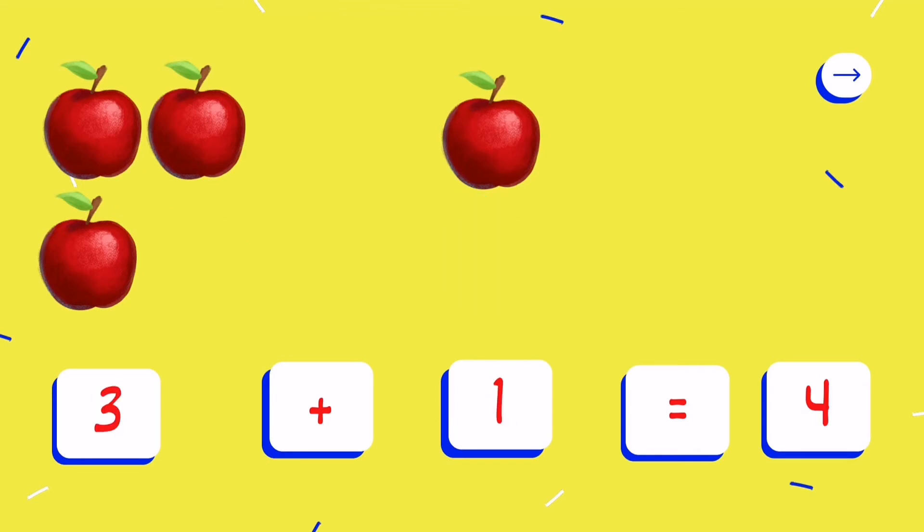How about this one? How many apples? 1, 2, 3 — 3 apples in the first group. How about the second group? 1 apple. That means 3 plus 1 equals 4.